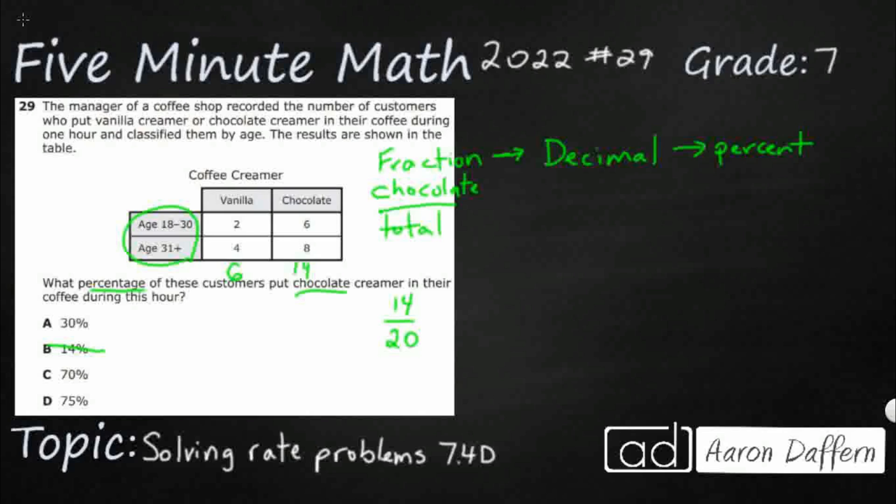Now, we're going to turn this into a decimal. Well, we've got two options here. We can always divide up. You can always divide 20 into 14. You can always do that to turn a fraction into a decimal. Or, if you can get your denominator into 10, 100, or 1,000, those are your first three decimal points. Tenths, hundredths, thousandths.